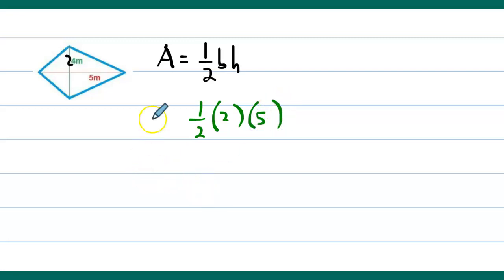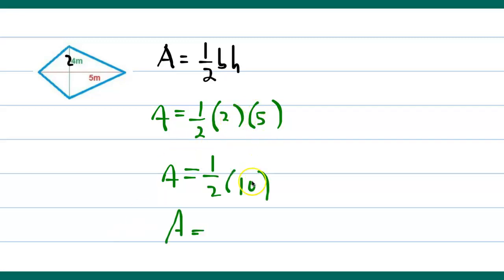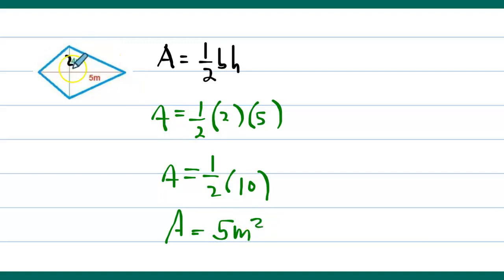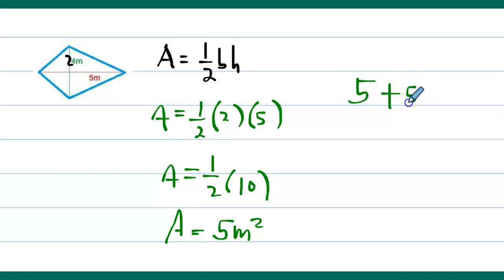So one-half times base times height: one-half times two times five gives us five. That's five square meters for one triangle. Since there are two identical triangles, we have five plus five, or five times two, so the total area of this kite is 10 square meters.